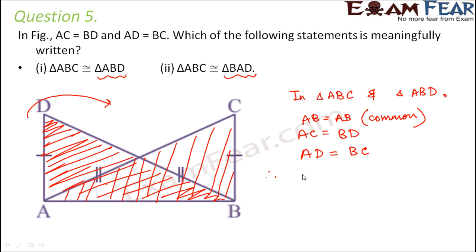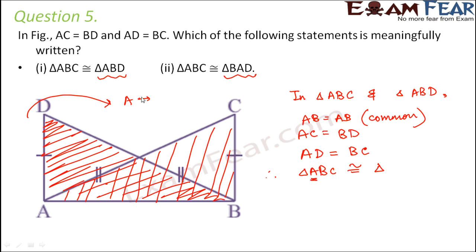So from this, we see that since all three sides are equal to their corresponding sides, we can say that triangle ABC is congruent to triangle — now A will fall on which part? A corresponds to point B. When you rotate the triangle to the reverse side and place it over triangle ABC, point A falls on point B.